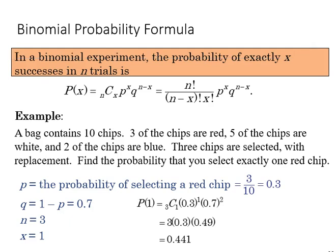This is the binomial probability formula, where the probability of success is equal to the number of trials factorial over the number of trials minus success factorial times success factorial.